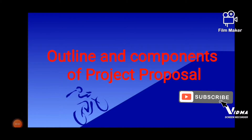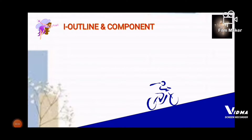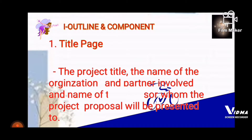Outline and Components of Project Proposal. Here is Part 1 of the outline and components of a project proposal. First, we have the title page. The things that can be found on your title page are: the project title, the name of the organization and the partner involved, and the name of the sponsor to whom the project proposal will be presented.